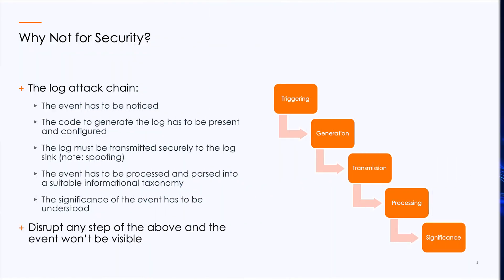When we talk about observability traditionally, we've leveraged telemetry data from distributed tracing, event logs, metrics, and so on. One of the things bad actors typically do when they establish persistence on a particular end system is they turn off telemetry. They'll try to turn off logs — not permanently, just for the short period of time when they're escalating privileges, enumerating drives, or moving laterally — and then they turn it back on again.